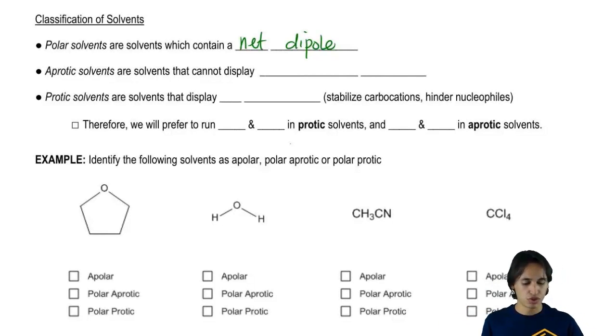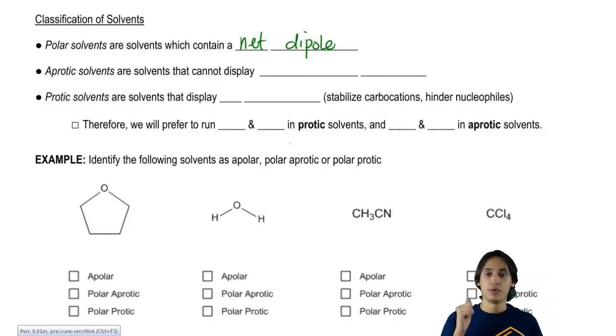Then we have two different types of solvents. We have aprotic solvents and protic solvents. And this I have to define because we've never really used that word before.